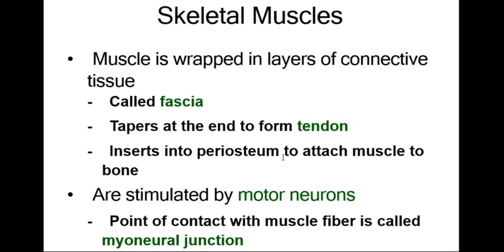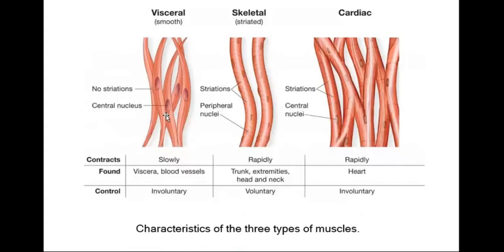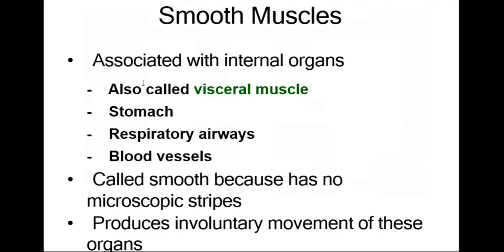Tendons insert into the periosteum to attach muscle to bone and are stimulated by motor neurons. The connection point with muscle fibers is called the neuromuscular junction. There are visceral involuntary muscles and involuntary cardiac muscle. Skeletal muscles are found in the trunk, extremities, head, and neck. Blood vessels contract slowly — this is the visceral or smooth muscle, associated with internal organs such as the stomach, respiratory airways, and blood vessels.